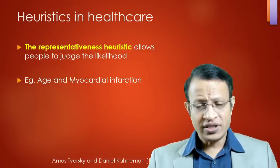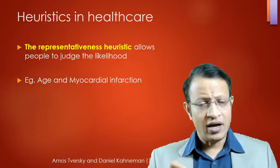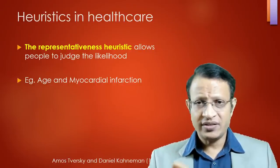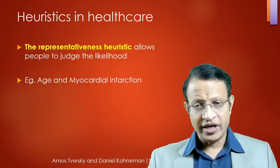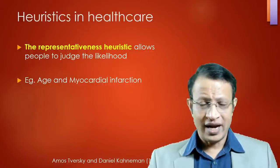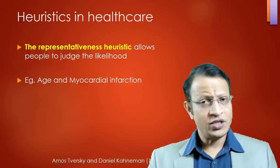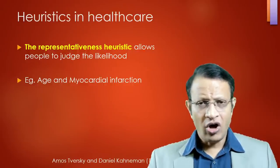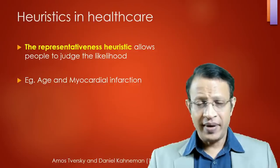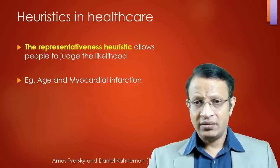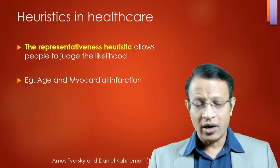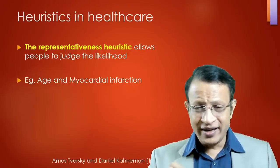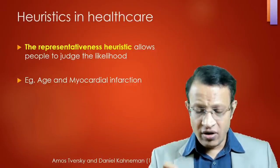Let's understand heuristics in the healthcare model. First is representativeness heuristics, which allows people to judge based on certain predictors. For example, if a young boy of 18 or 20 reports chest pain, you assess whether it is myocardial infarction or musculoskeletal pain based on age. If an elderly person aged 70 complains of chest pain, you will think of myocardial infarction. Depending on certain predictors, you take a decision — that is the representativeness heuristic model.